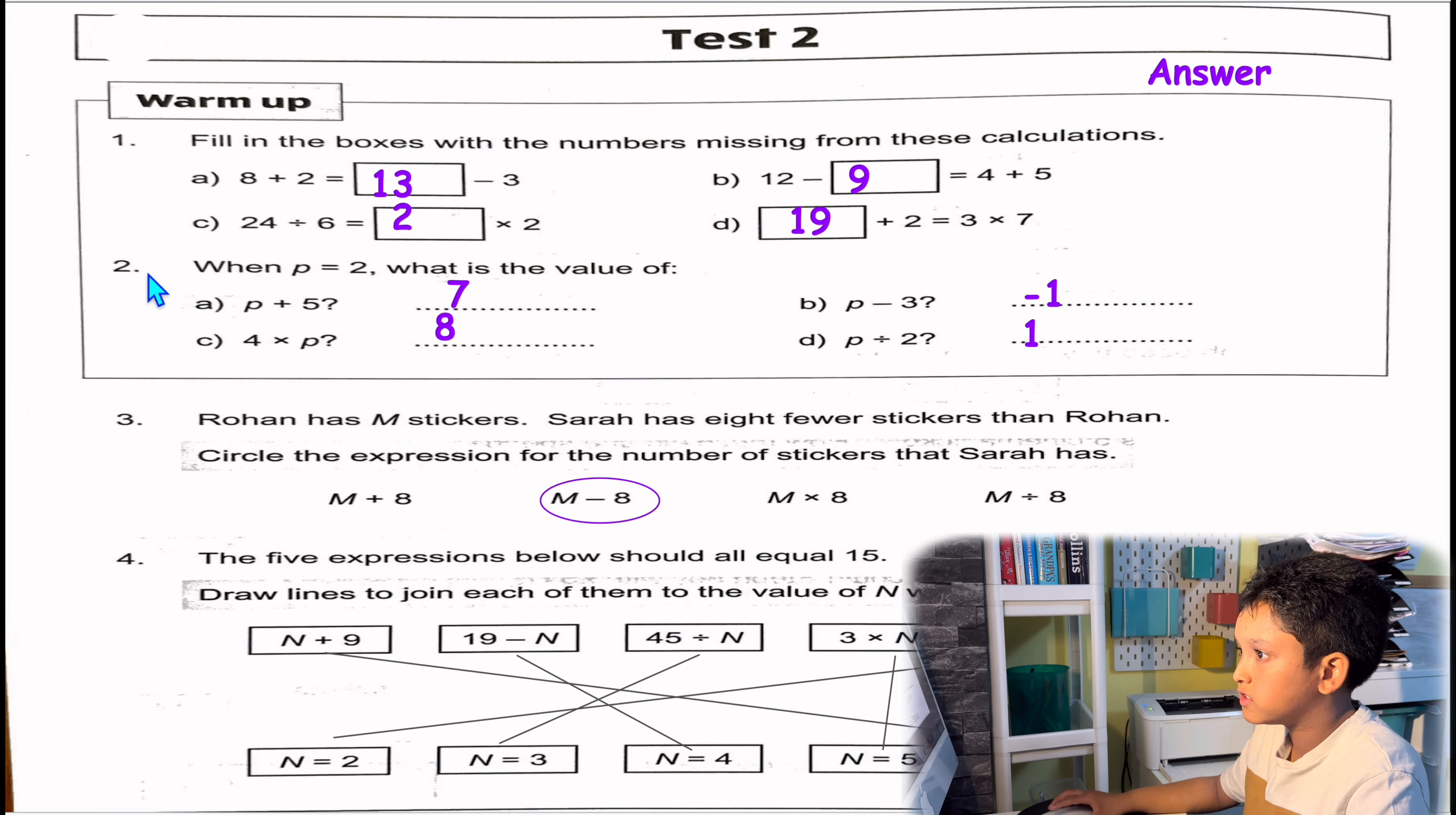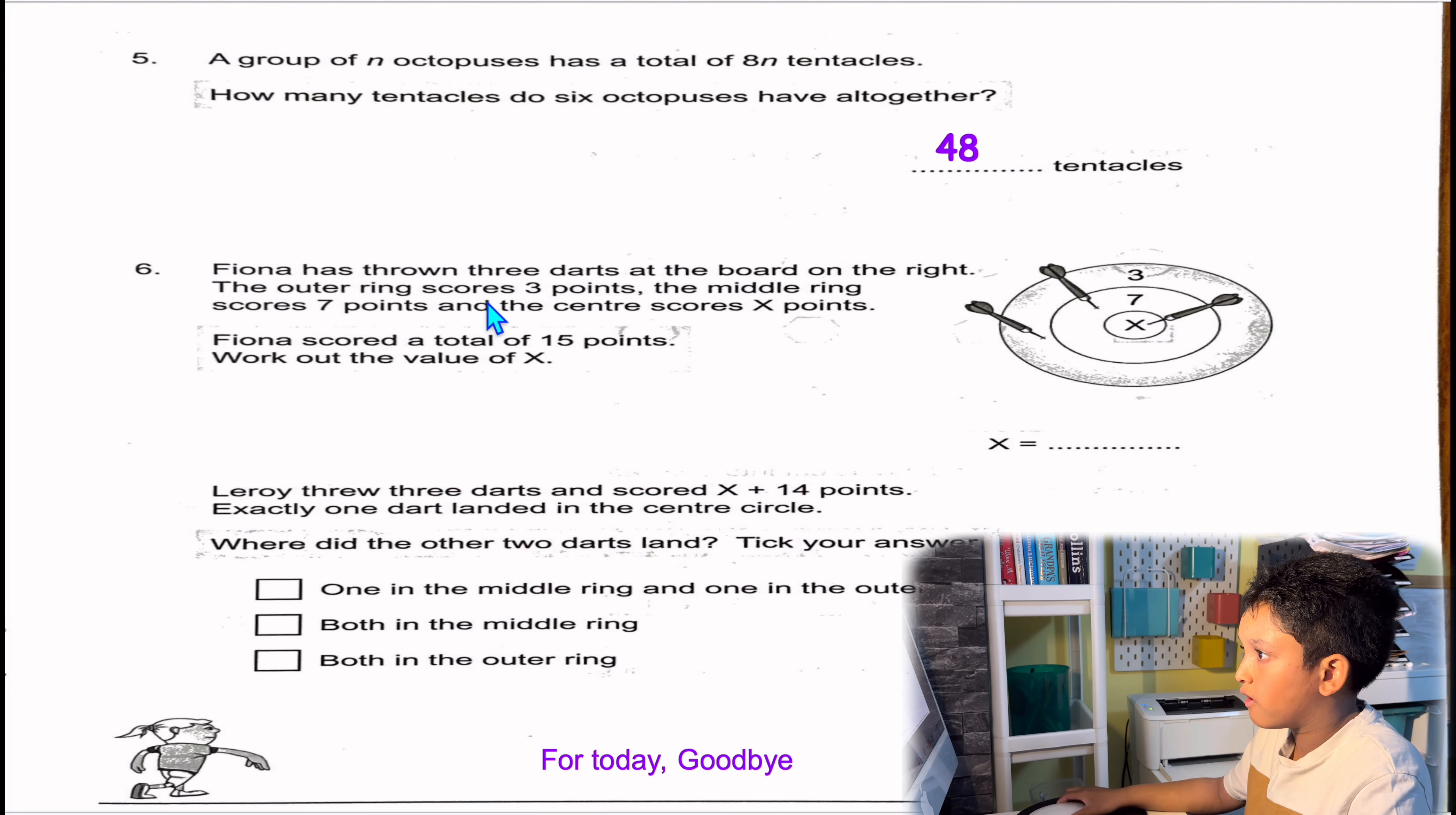Question 6: Fiona has thrown 3 darts at the board on the right. The outer ring scores 3 points, the middle ring scores 7 points, and the centre scores X points. We don't know the X. Fiona scored a total of 15 points. Work out the value of X. Look where she hit them: 1 in the outer ring, 1 in the middle, 1 in the centre. She had 15 points. And 7 plus 3 is 10. So take away 10 from 15, you'll leave 5. That means she hit 1 more and that will be 5. So X will be 5.